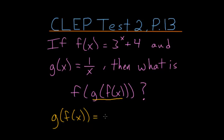So g of f of x is the same thing as g of this 3 to the x plus 4. And so we're replacing this x inside g of x with this entire function, 3 to the x plus 4. So this entire thing, g of f of x, is equal to 1 over 3 to the x plus 4.